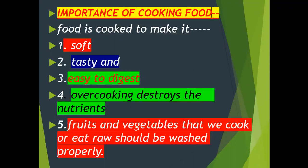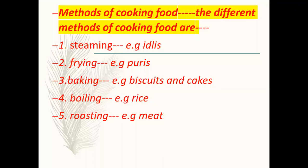Fruits and vegetables that we cook or eat raw should be washed properly. There are different methods of cooking food — these are steaming, frying, baking, boiling, and roasting.